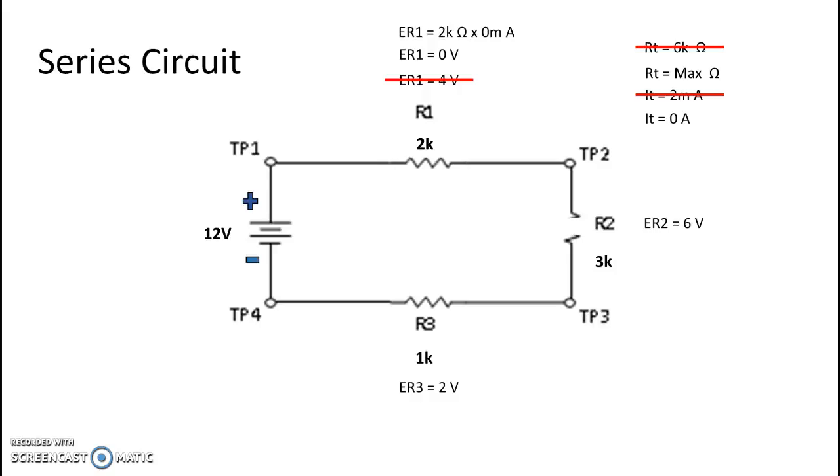In this case it's 12 volts, and because there is no current flow there's no voltage drops. And no voltage drops mean no difference of potential, so everything on this side up here is 12 volts.